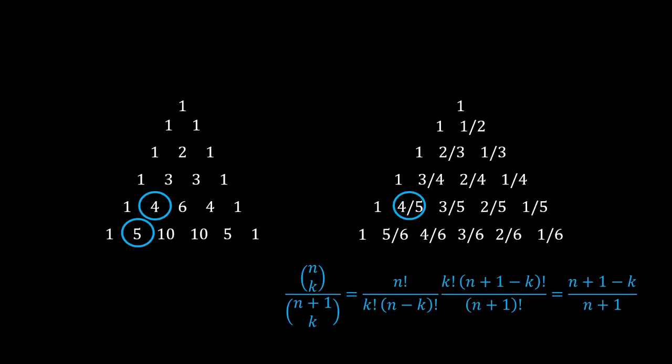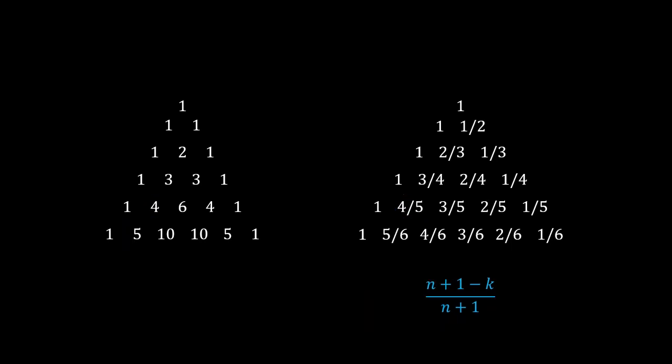Well, let us now consider taking the products of terms in each row. So in the Pascal triangle, we call that product Pn. But how about in the second triangle?